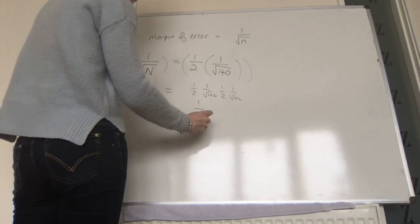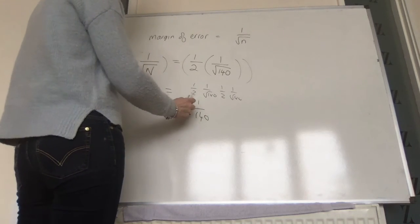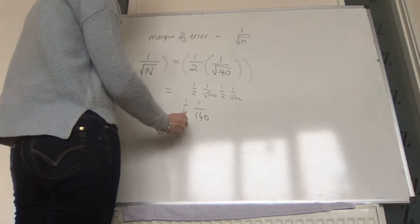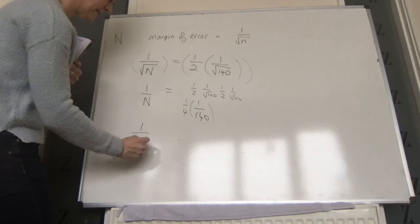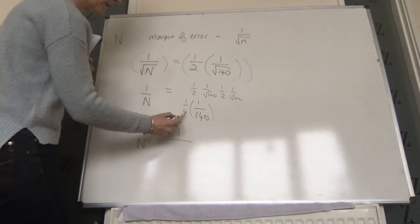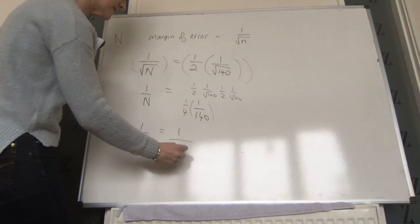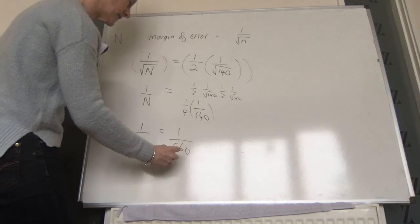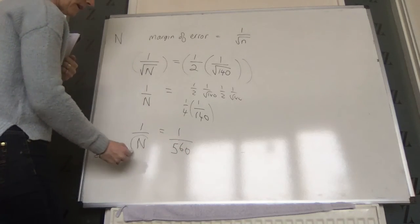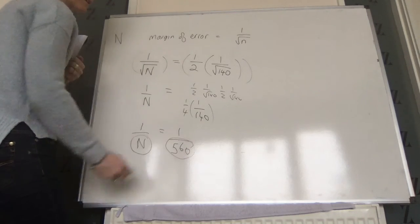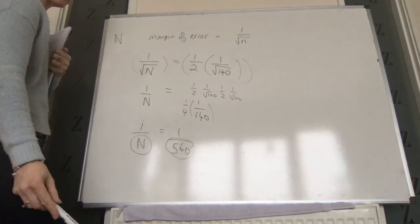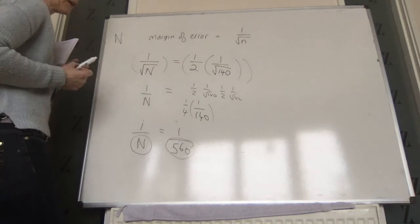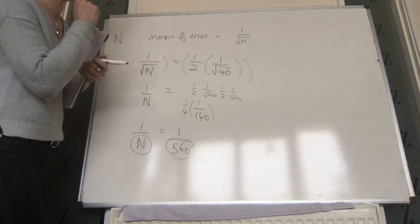So we get 1 over n is equal to 1 over, and 4 times that is 560. So our n would need to be 560. Because if 1 over n equals 1 over 560, then n would have to equal 560. I'll pause it here, and I'll do another video for the next part.